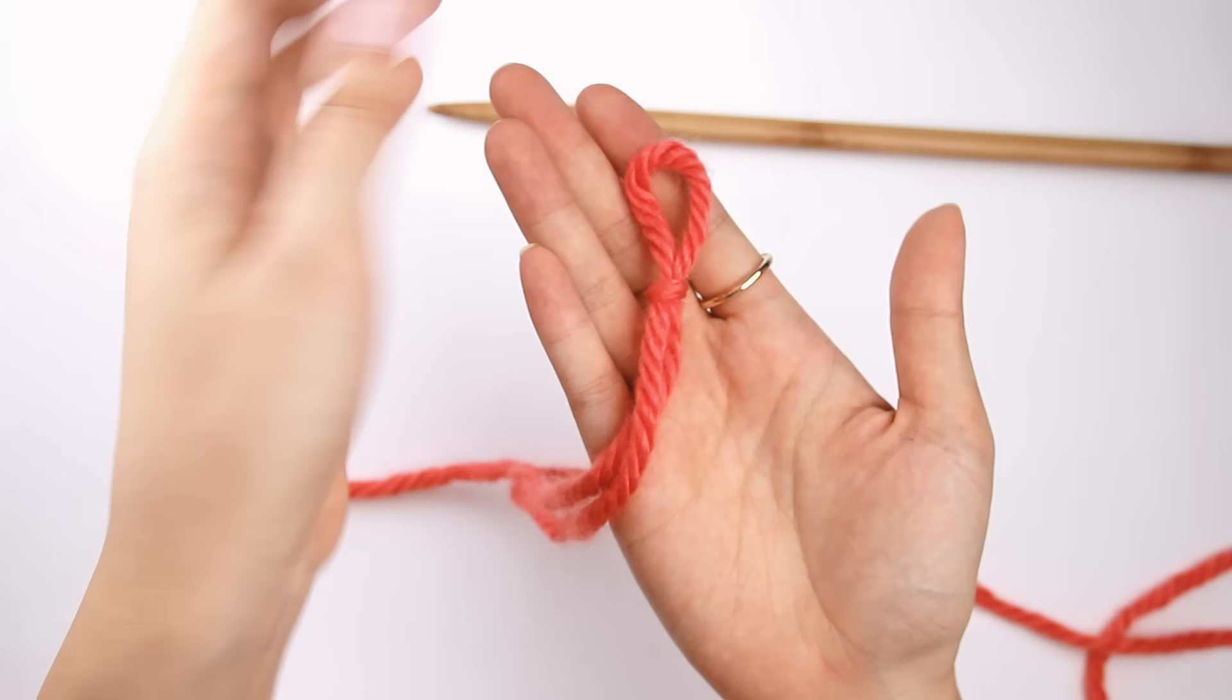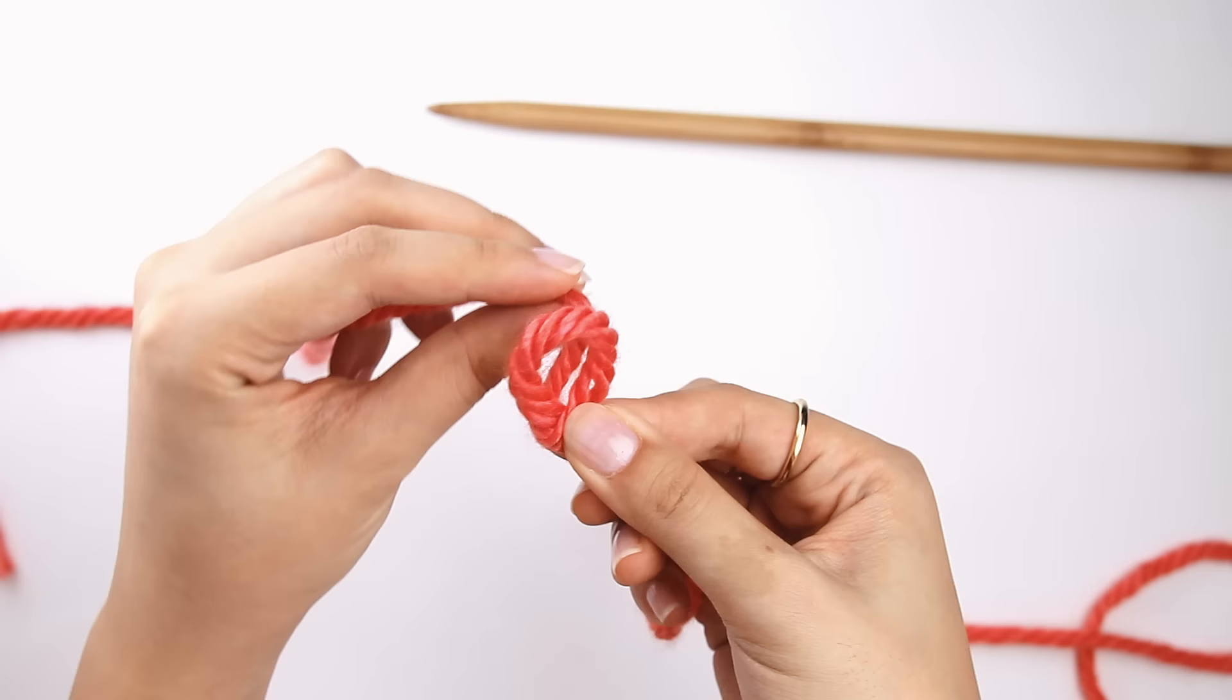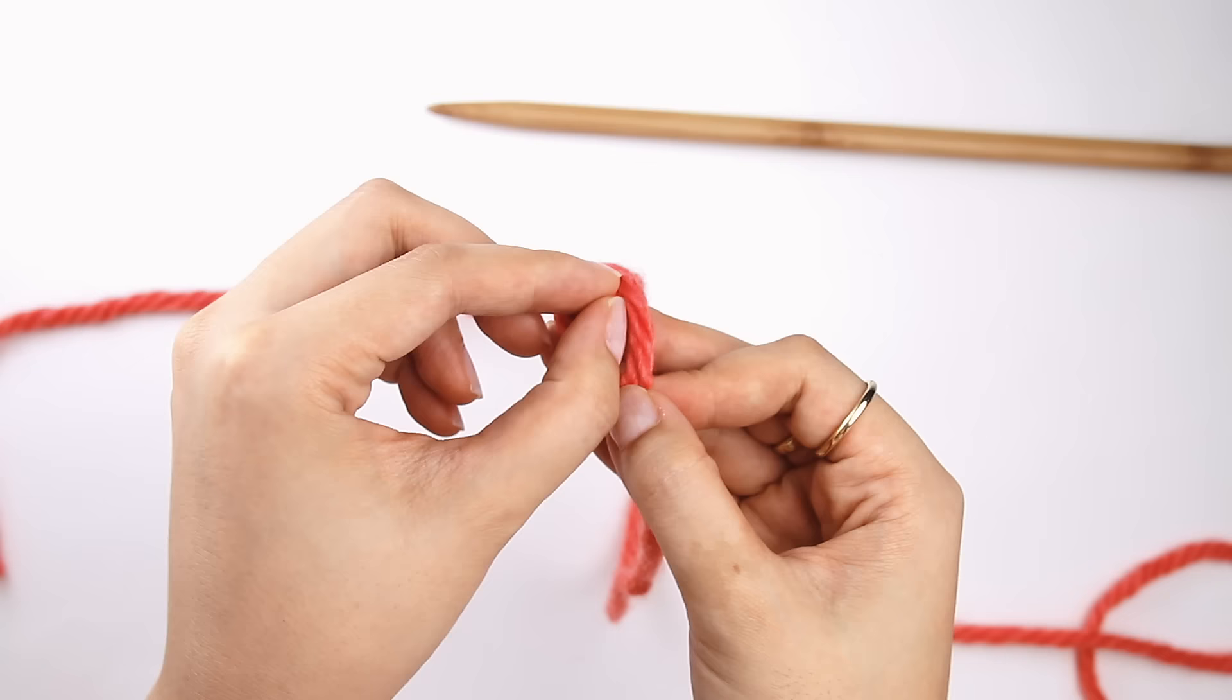So let's do that again. No slipknot, and now I'm going to make a loop, just like this, and I'm going to hold that loop, take my strand of yarn, bring it behind the loop so that it's in the middle of the loop, and I'm going to just pick out that strand of yarn from my loop. There we go. So now there's my slipknot.